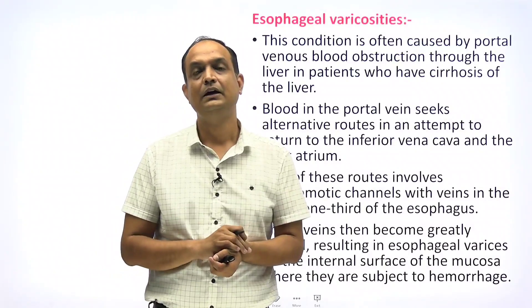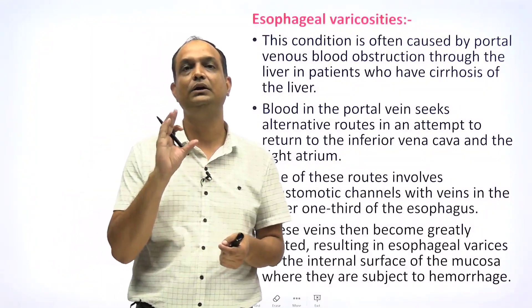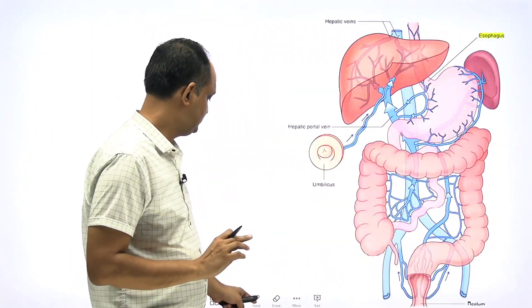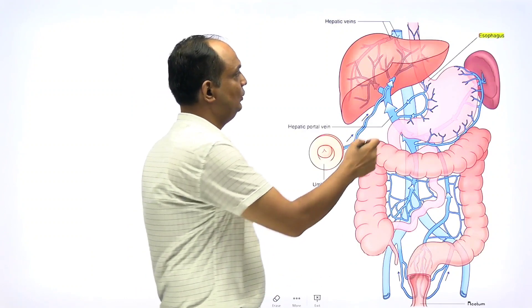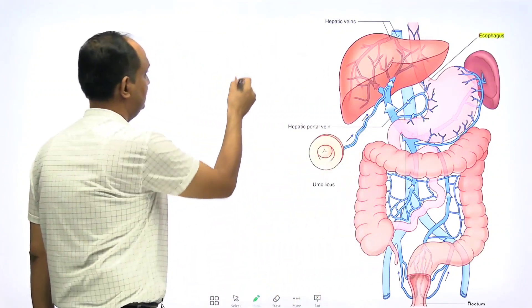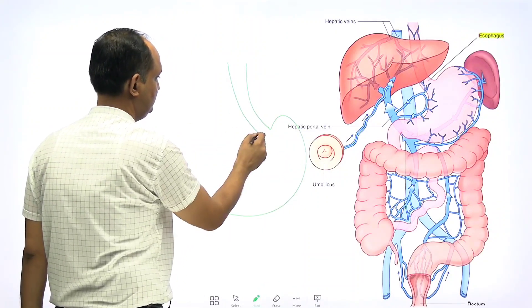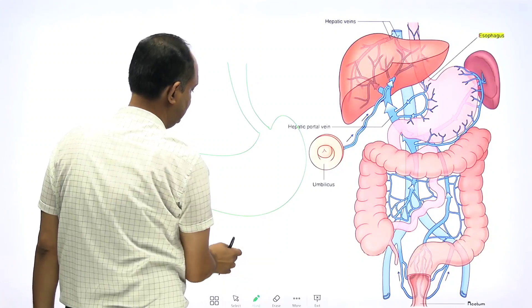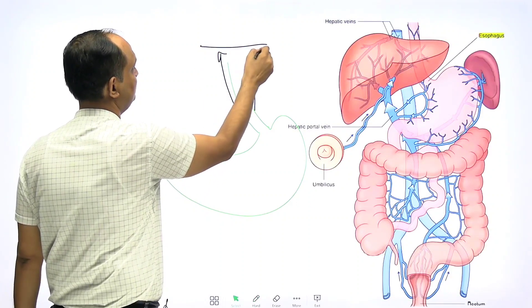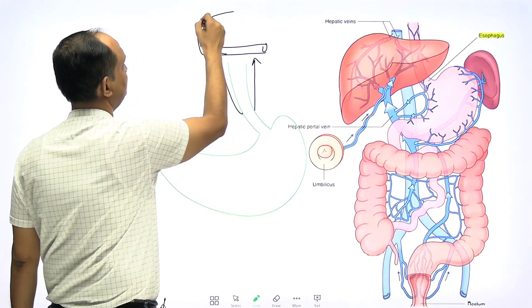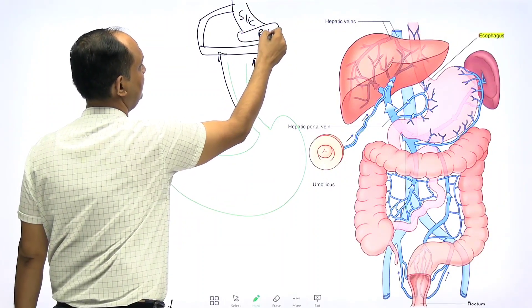The first topic is esophageal varices. In Part 1, we saw the venous drainage of the esophagus, particularly the lower one-third. The lower one-third has two sets of veins. One set drains venous blood into the azygous system, and from the azygous system this blood enters the superior vena cava and then into the right atrium.